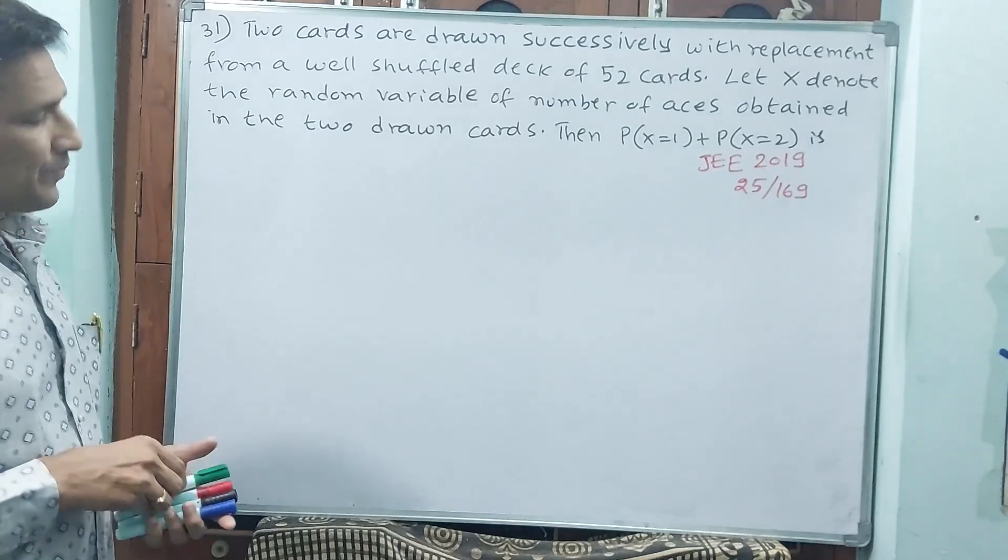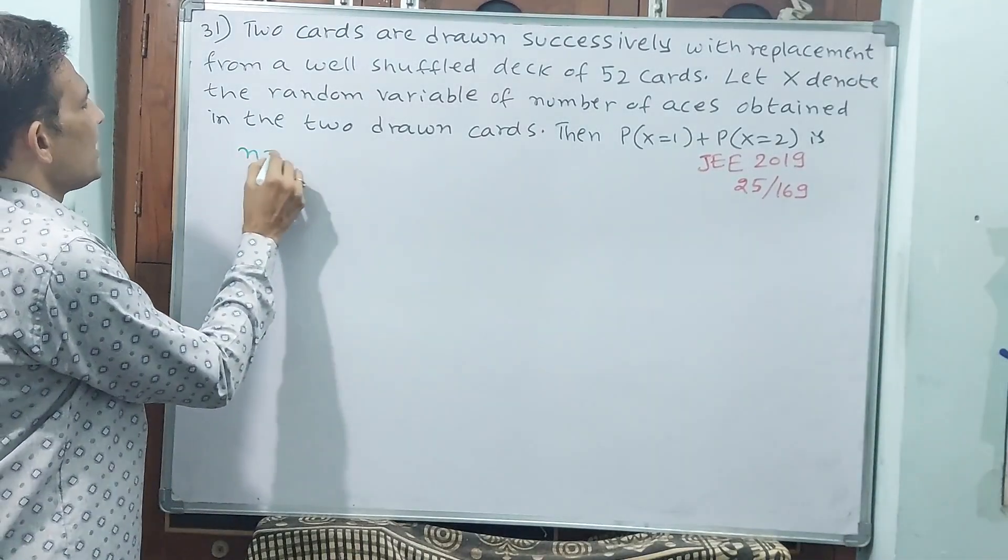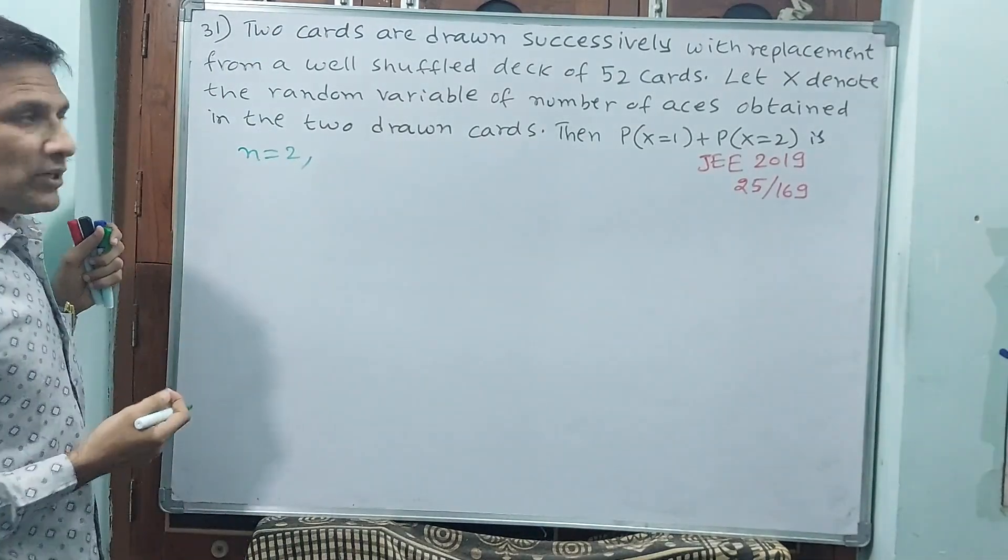See, here what I want to say. Two cards are drawn, meaning n equals 2. Two cards are drawn, so that is one thing.